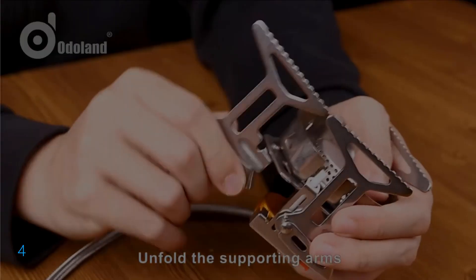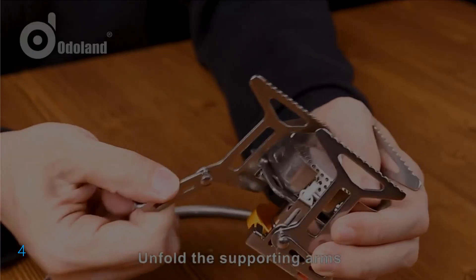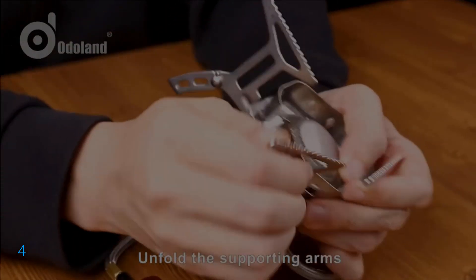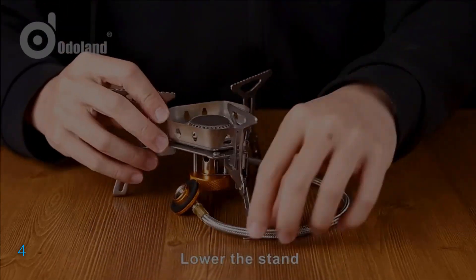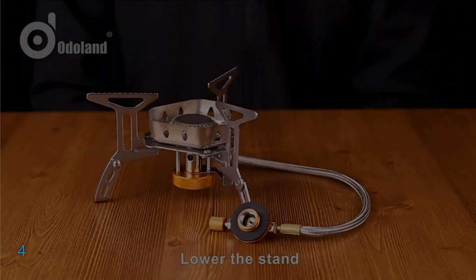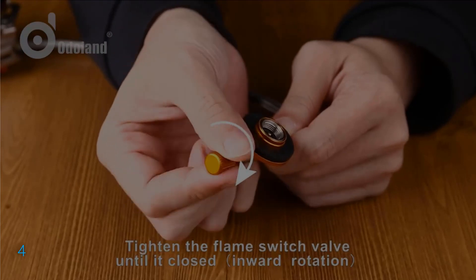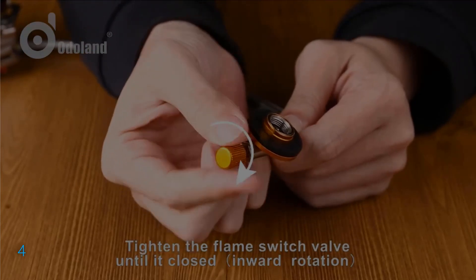Crafted from durable stainless steel and aluminum, this portable stove is designed to withstand the rigors of the wilderness. Its compact dimensions of 5.7 inches in length, 5.7 inches in width, and 3.8 inches make it perfect for backpacking, hiking, picnics, and more.